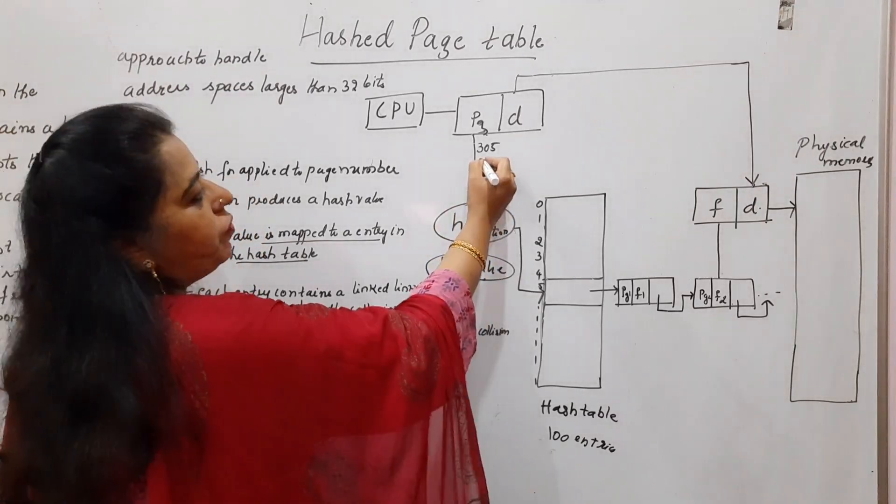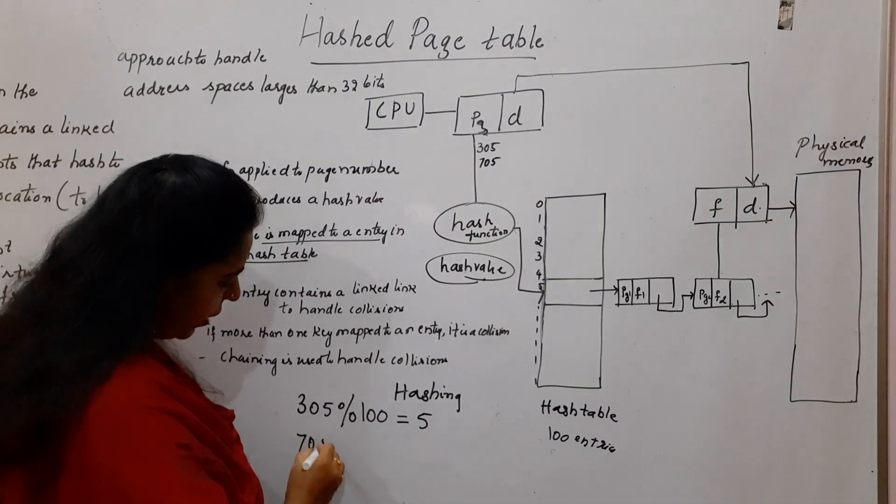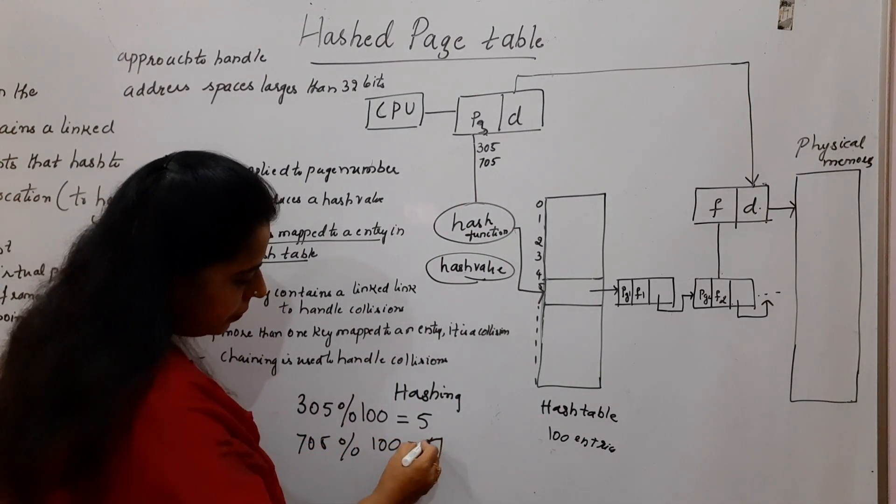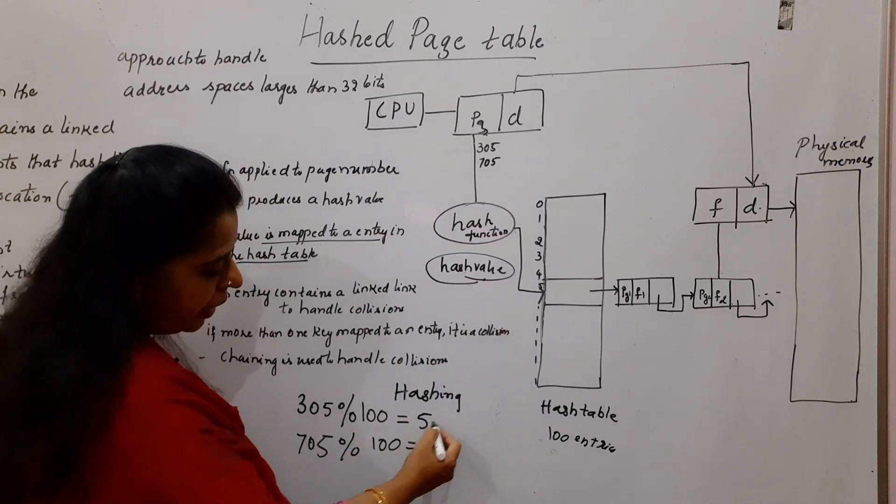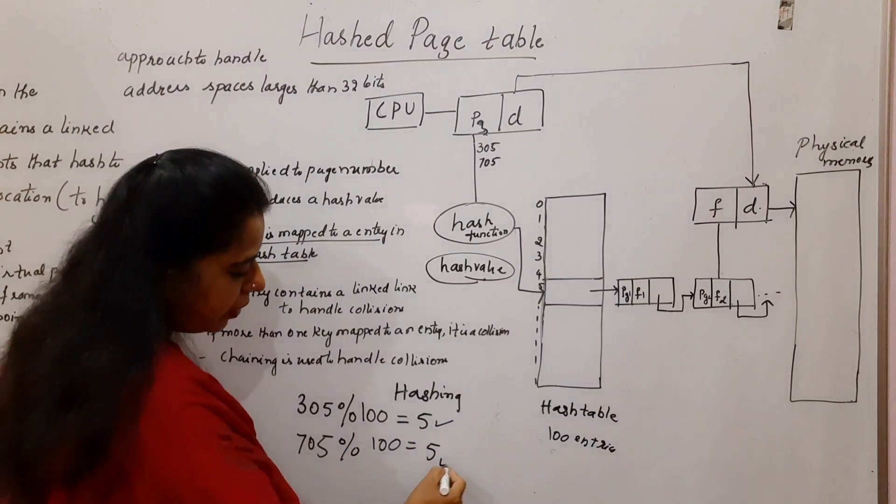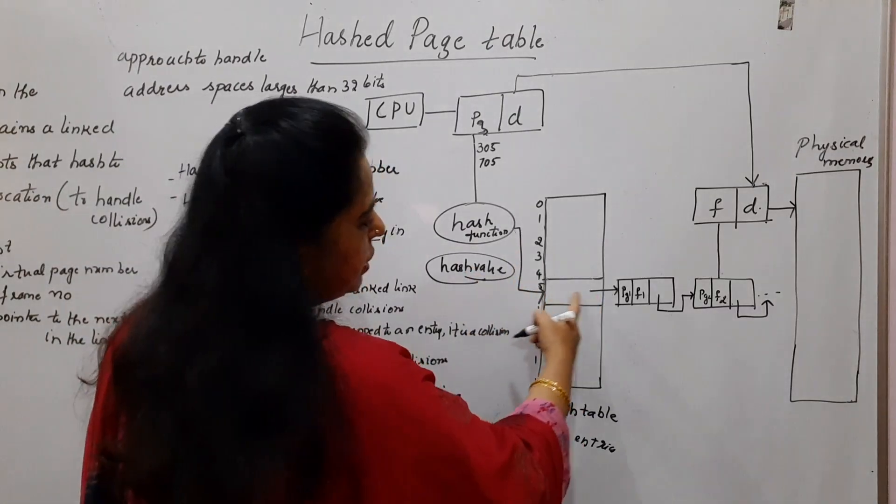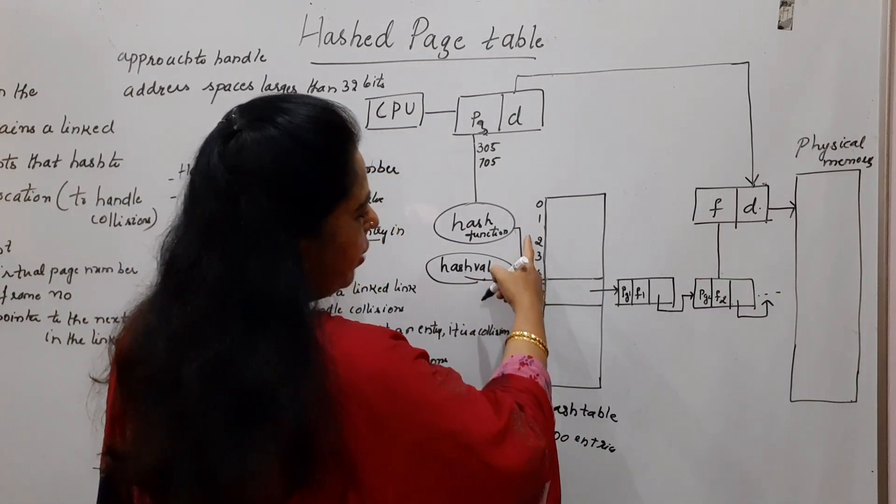Suppose imagine if your page number is 705, then 705 modulo operation will give you 5. What is the hash value? Hash value is 5 in this case also. So that means the same hash value is mapped to a particular location.